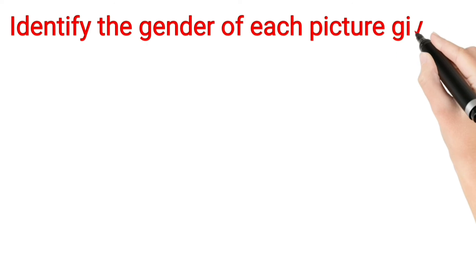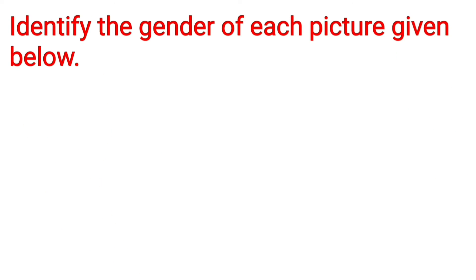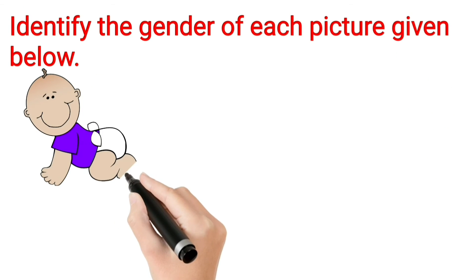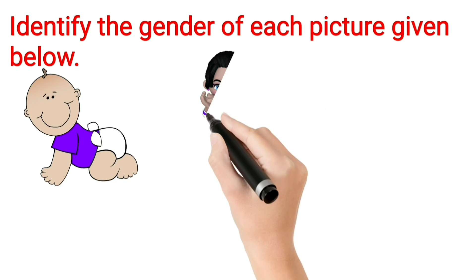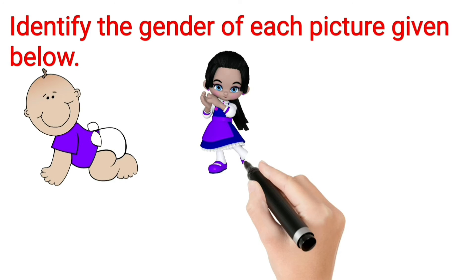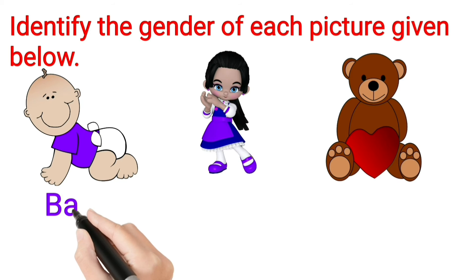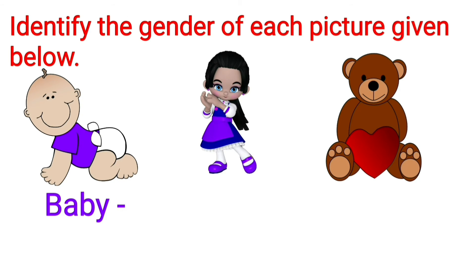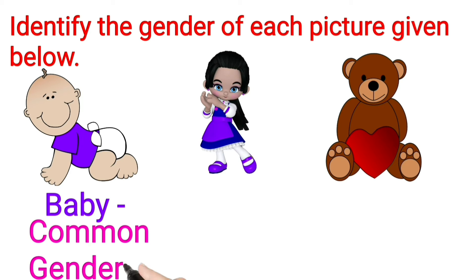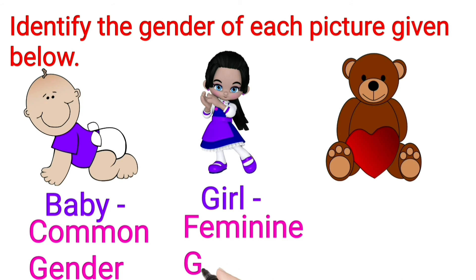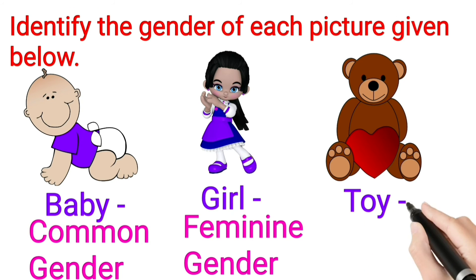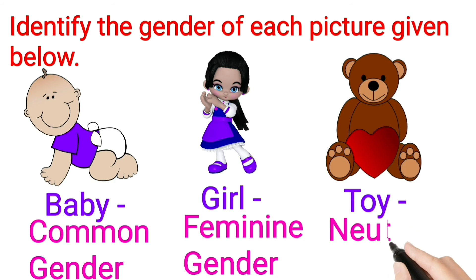Identify the gender of each picture given below. First one: Baby — Common Gender. Second one: Girl — Feminine Gender. Third one: Toy — Neuter Gender.